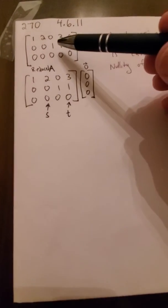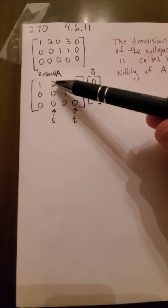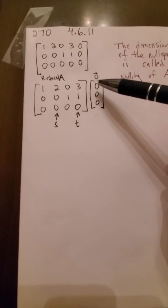Notice that in our last example, we wound up with this matrix, which really represents the reduced A and the zero vector.